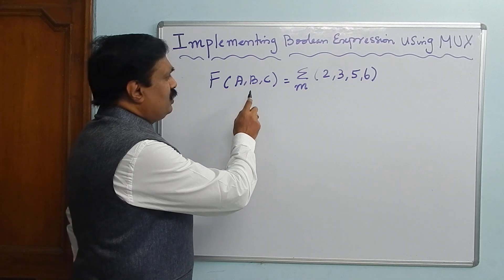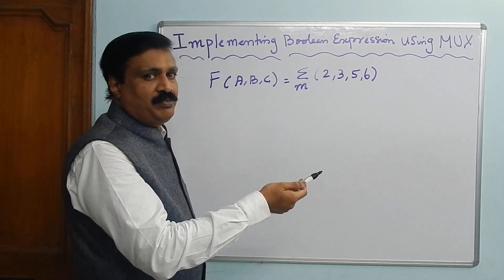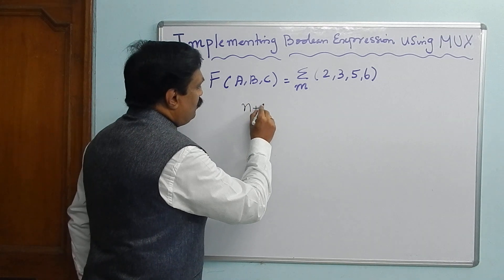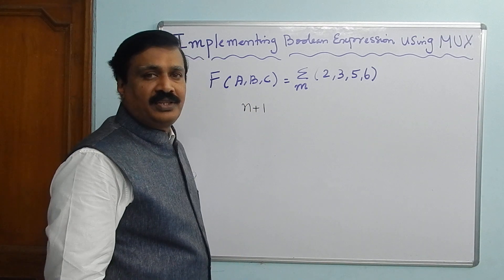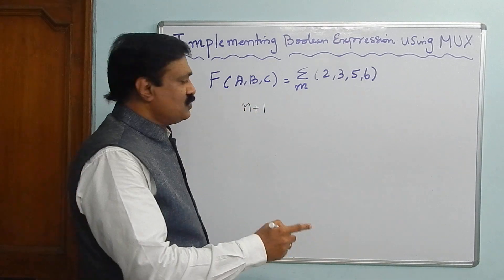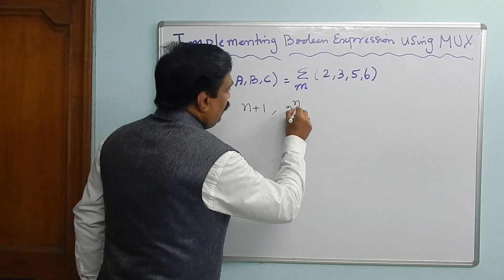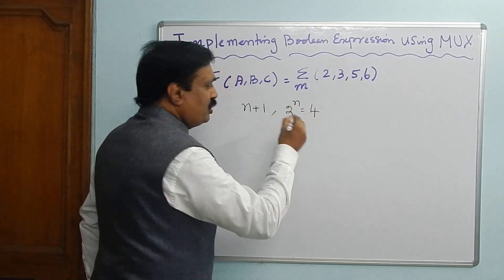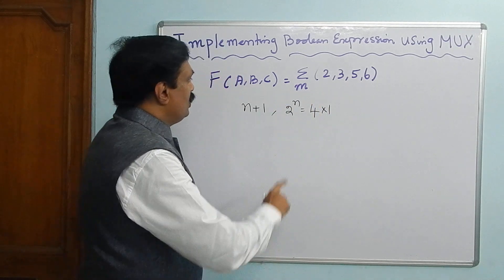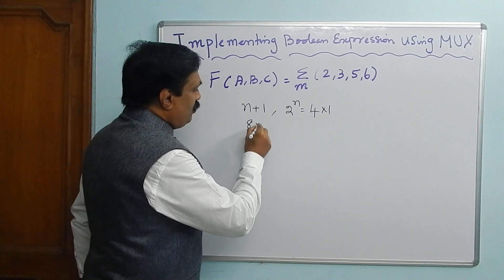In the last class we have seen 8-by-1 multiplexer and 4-by-1 multiplexer. Here 3 variables are there. If you directly implement, it is an 8-by-1 multiplexer.